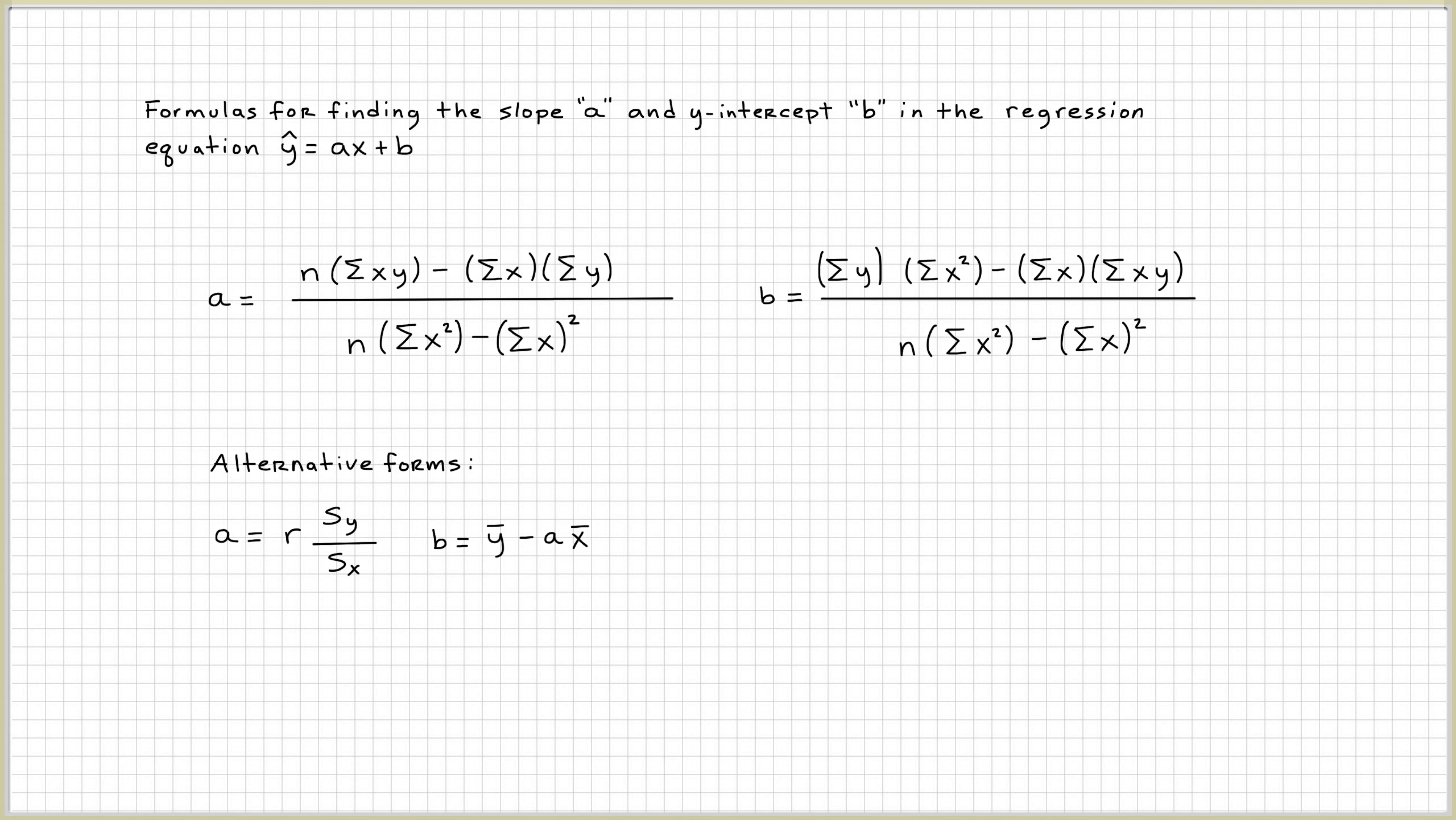Usually, we calculate the regression using these two formulas. A in this case is the slope and B is the y-intercept. You can see that usually you'll have to do sums of x times y, sum of x, sum of y, sum of x squared.